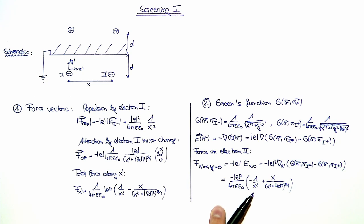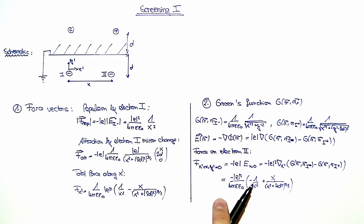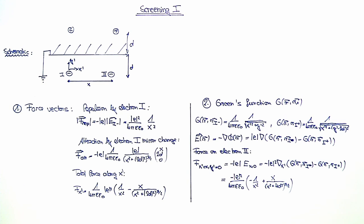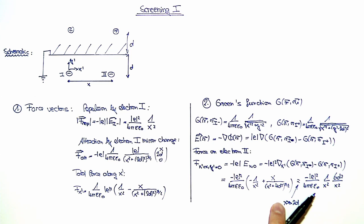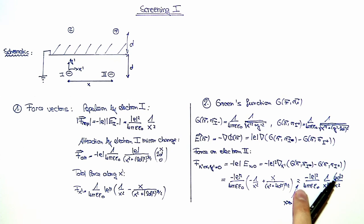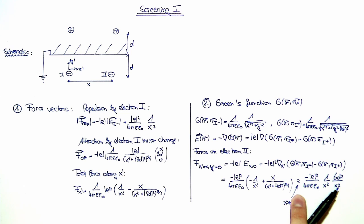You can see that this result is exactly the same as what we derived before with the other method. Now, for x being much larger than 2d, we can Taylor expand this term here such that we obtain the following approximate expression for the force. In the final result, we can again easily see the influence of the ground plane, which comes into play because of this term here, which reduces the repulsive electron interaction due to the screening.